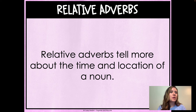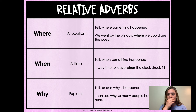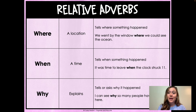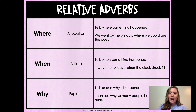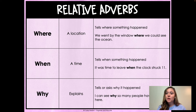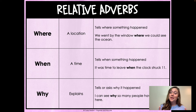Relative adverbs are words that tell about the time and location of a noun. The relative adverbs are a little bit more simple, I think, to use — where tells about the location, when tells about the timing, and why explains something. So these question words are being moved to the middle of a sentence and share more information. I hope this information was helpful as you're learning about relative adverbs and pronouns, and feel free to take a look back at these charts while you're working if needed.